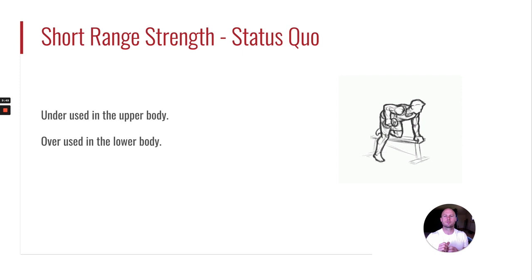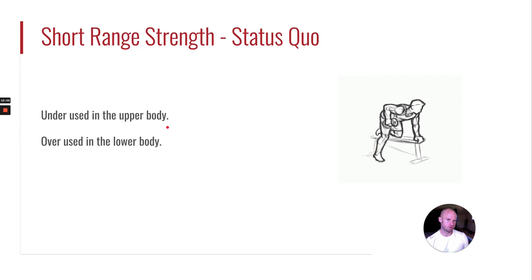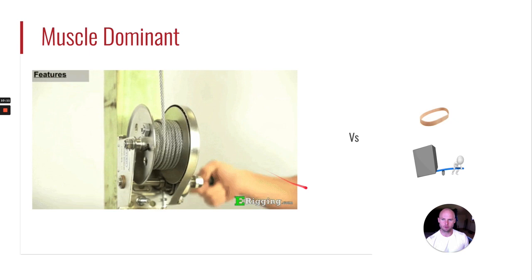This overuse of short range of motion movements in the lower body is part of the reason why the lower body becomes very fragile. We could do with using them more in the upper body to increase mind-muscle connection and force specific movements like the one-arm chin-up or the chest-to-bar chin-ups.